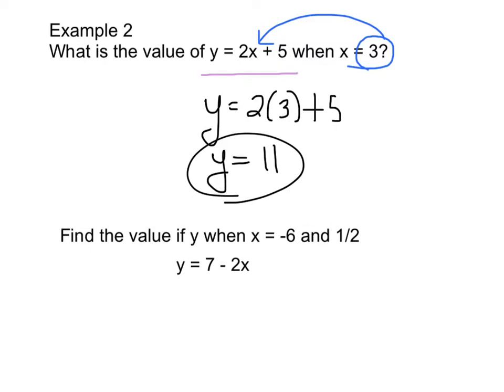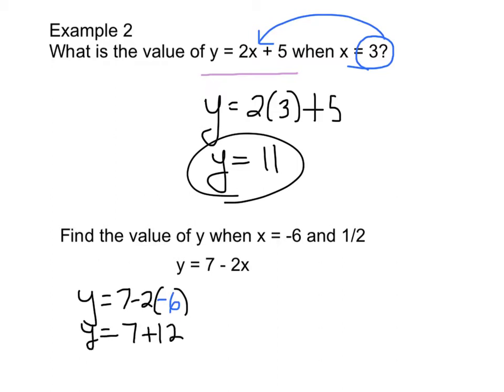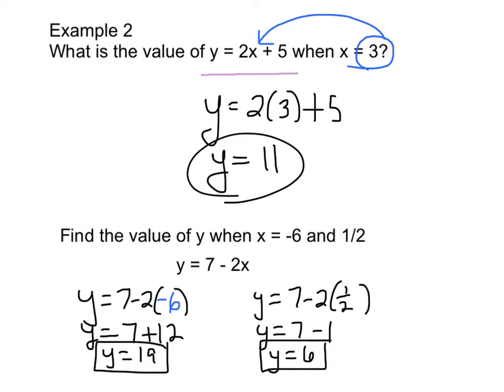For the next example, we're going to find the value of y when x is negative 6 and a half. First, y equals 7 minus 2 times negative 6. That's 7 plus 12, so y equals 19. Secondly, y equals 7 minus 2 times a half. 2 times a half is 1, so 7 minus 1 gives us a y value of 6. Your input is negative 6 and a half. Your output would be 19 and 6.